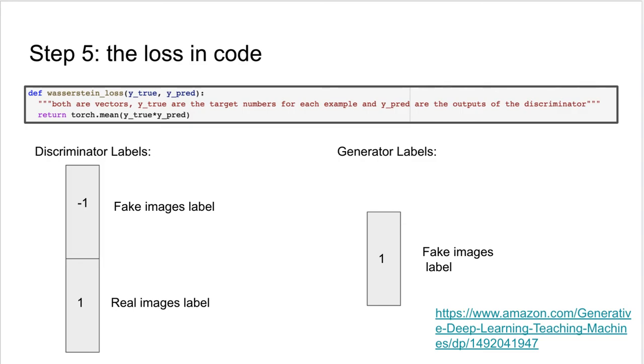The way to implement this in PyTorch is very simple. We just take the average over the product of the real labels and the predicted labels. The reason this works is the way we assign labels. For the discriminator training, real images are labeled 1 and fake images are labeled minus 1. When the generator is training, we switch this and assign a label of 1 to the generated images.